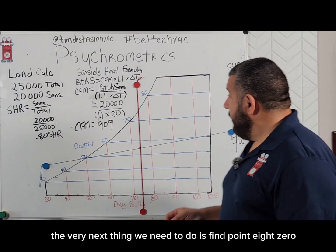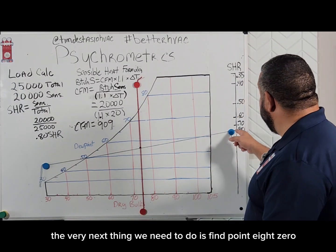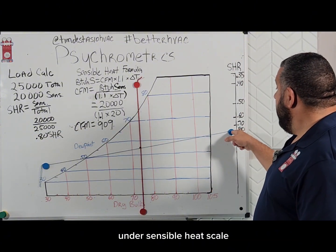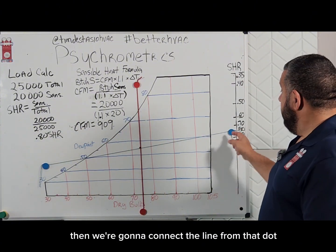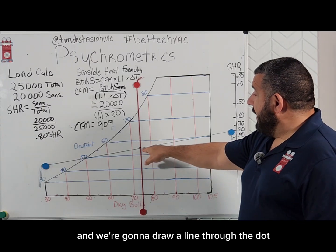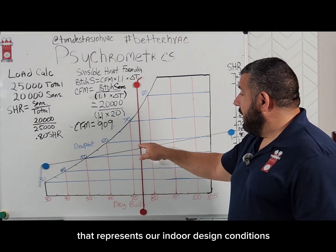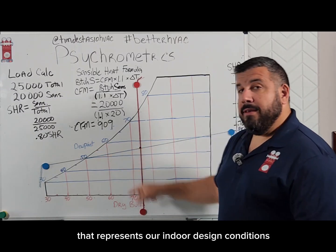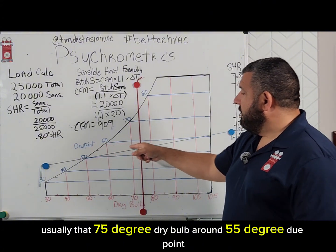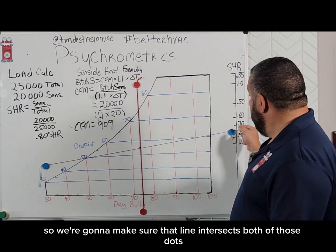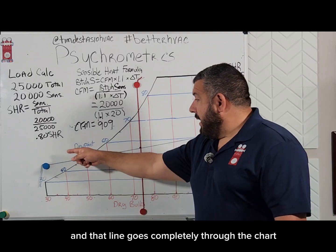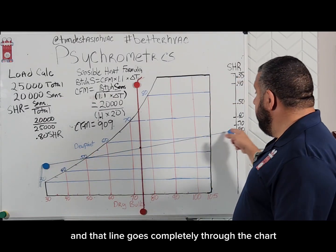What do we do with that? We find 0.80 on our sensible heat scale and draw a dot right there. Then we connect a line from that dot and draw it through the dot that represents our indoor design conditions — usually 75°F dry bulb, around 55°F dew point — making sure that line intersects both dots and goes completely through the chart.